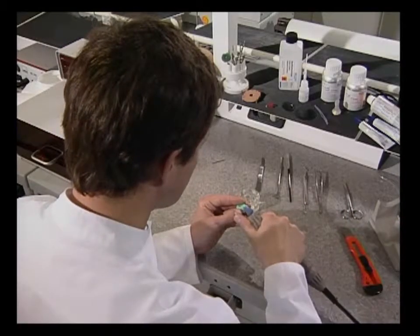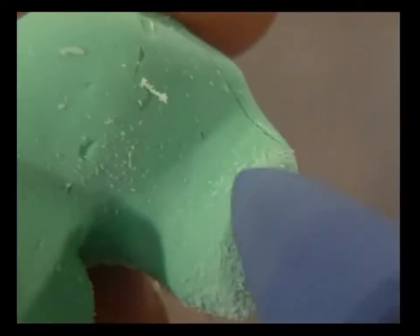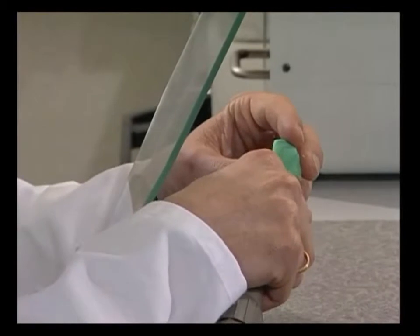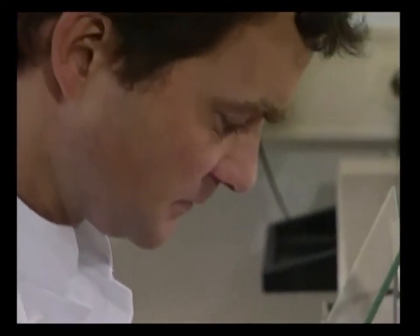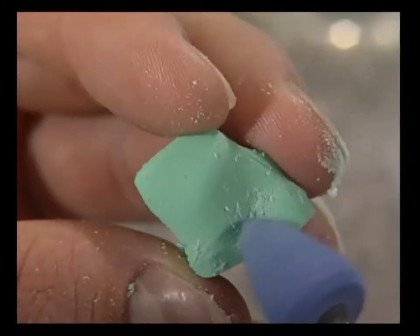If the auditory canal has a pronounced conical course, it should be carefully removed in this area with a pear-shaped or pointed trimmer to simplify the insertion of the finished shell into the wearer's ear. Sharp edges and trims are then removed from the impression.